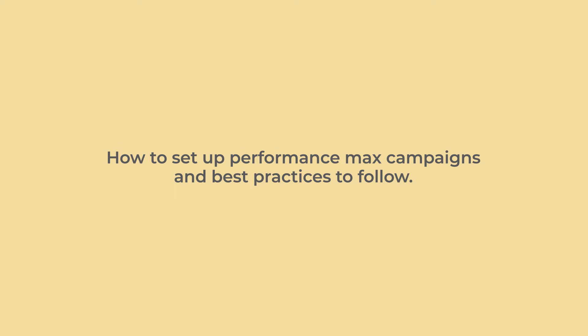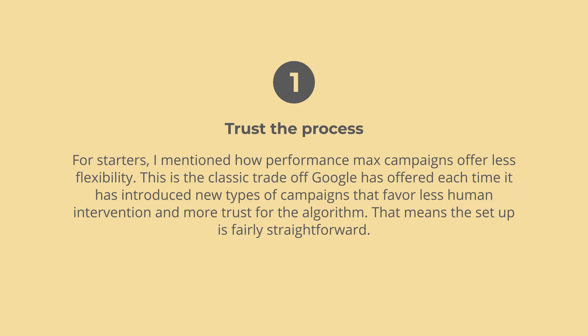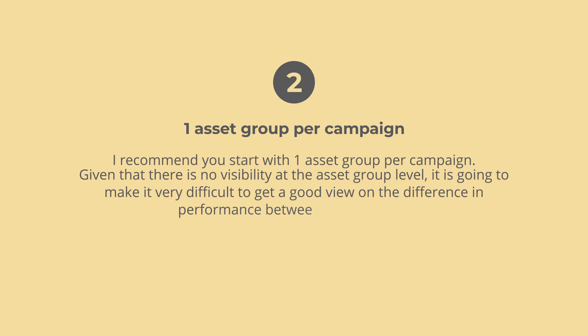Here's how to set up performance max campaigns and best practices to follow. Number one: trust the process. Performance max campaigns offer less flexibility — this is the classic trade-off Google offers each time it introduces campaign types that favor less human intervention and more trust for the algorithm. That does mean the setup is fairly straightforward, which is good. Number two: start with one asset group per campaign. Given that there's no visibility at the asset group level, it's going to be very difficult to get a good view on the difference in performance between asset groups.